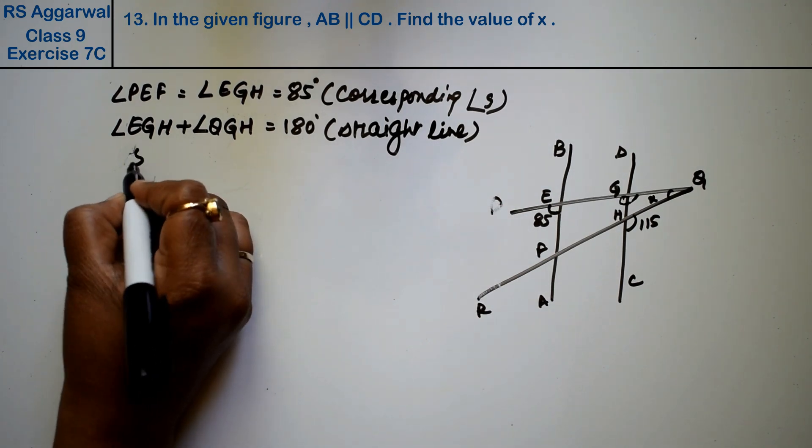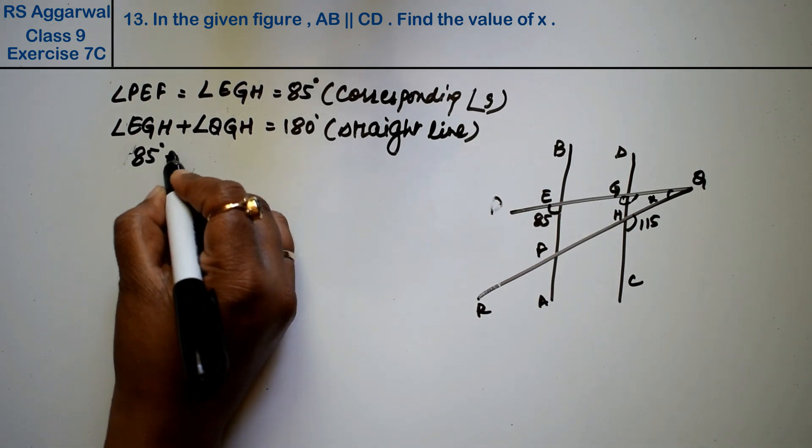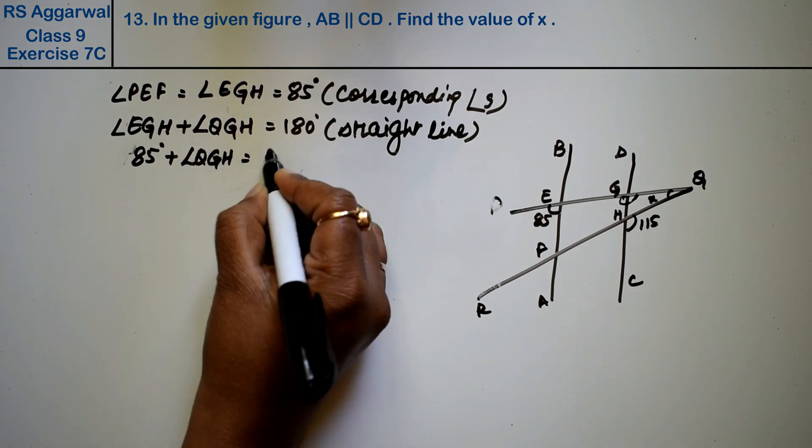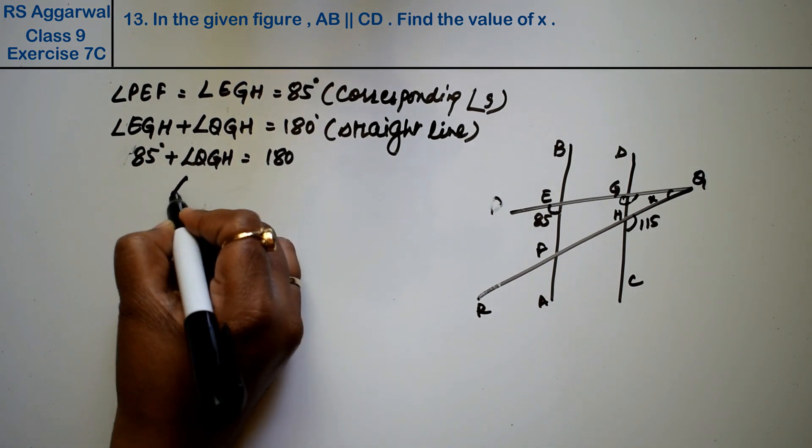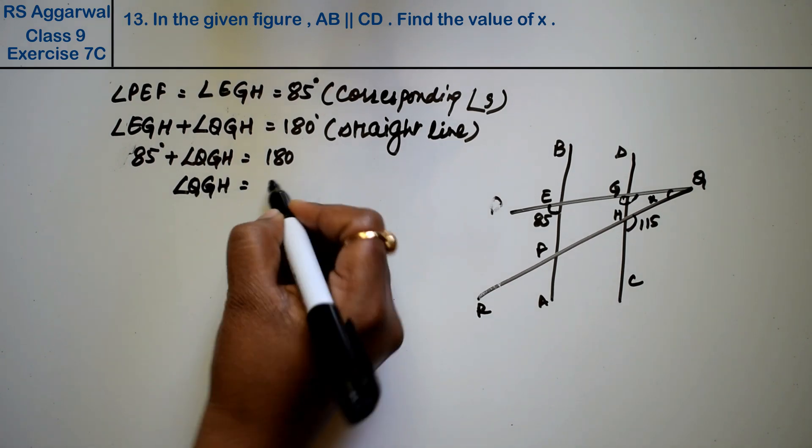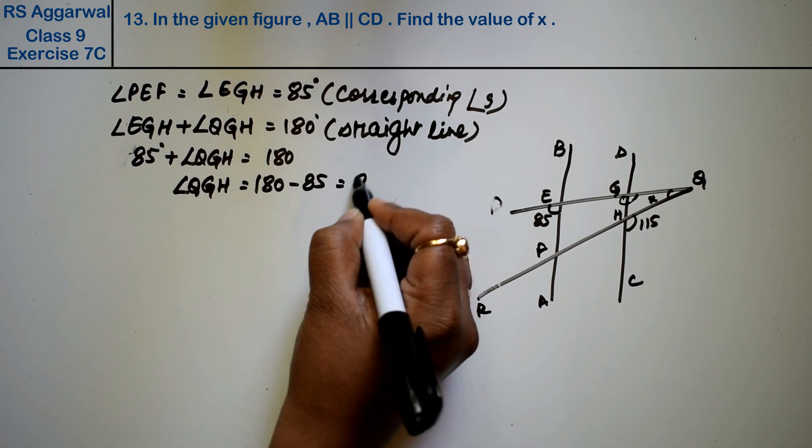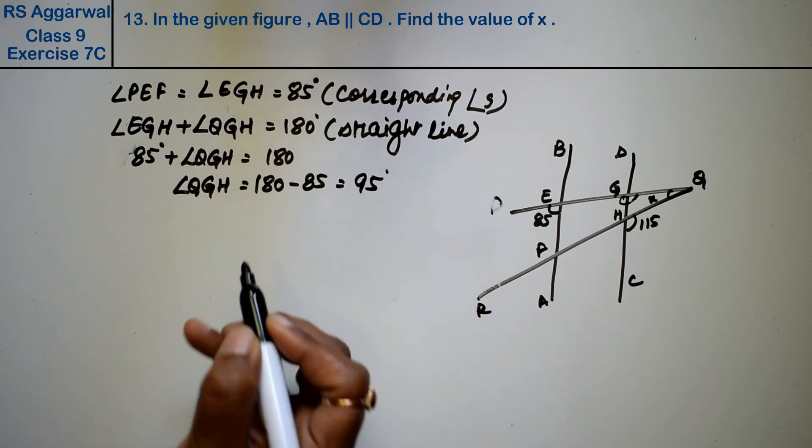Now EGH, we know, is 85 degrees, plus angle QGH equals 180 degrees. So what is angle QGH? 180 minus 85, this is 95 degrees, right friends.